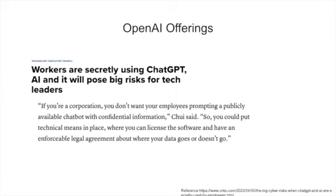Another offering is organizational transparency - you can see what your workers are doing. Since workers are using ChatGPT anyway, why not offer an enterprise ChatGPT license so you can know what queries your workers are submitting? That way you can have vigilance over what information is being shared.